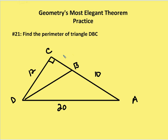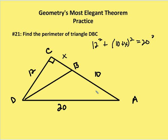We're going to define CB as X. We need to find the perimeter of DBC, so the first thing we'll figure out is what CB is, and then once we have CB, we can figure out what DB is. Using A squared plus B squared equals C squared: 12 squared plus (10 plus X) squared is equal to 20 squared. So DC squared plus CA squared equals 400, giving us 144 plus 100 plus 20X plus X squared equals 400.